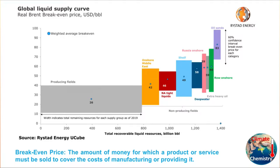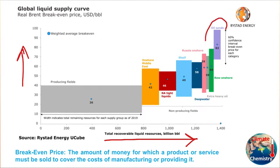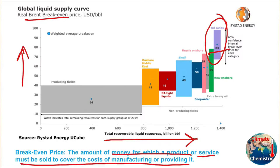Looking at production cost versus total recoverable liquid reserves, for Canadian sand oil the production cost is near about $83. The break-even price is the amount at which a product must be sold to cover manufacturing cost. The production cost is $83, whereas the oil price at the time of recording is near about $73 USD — so selling this oil today is obviously not profitable.